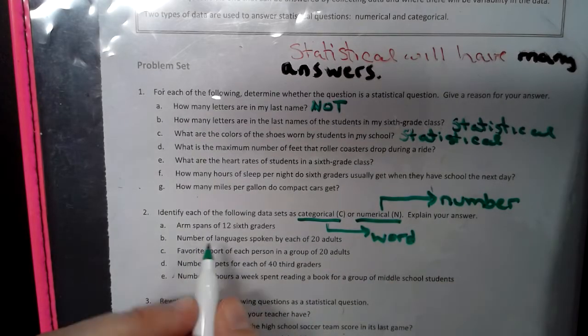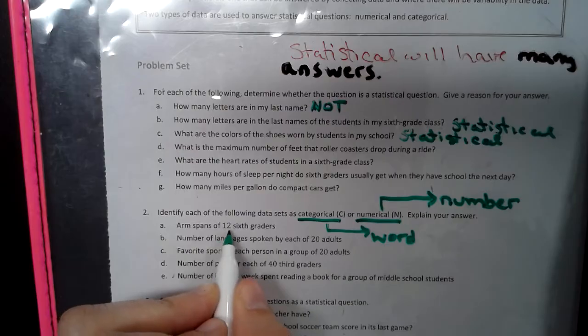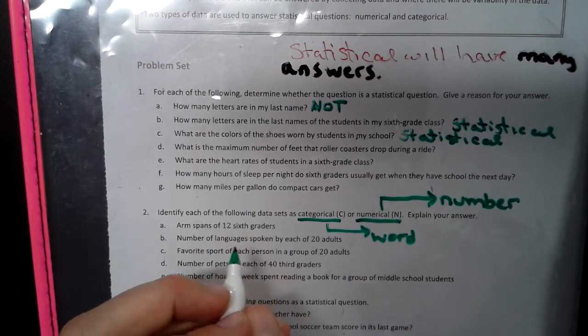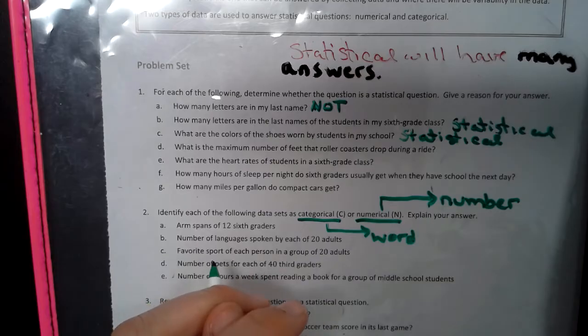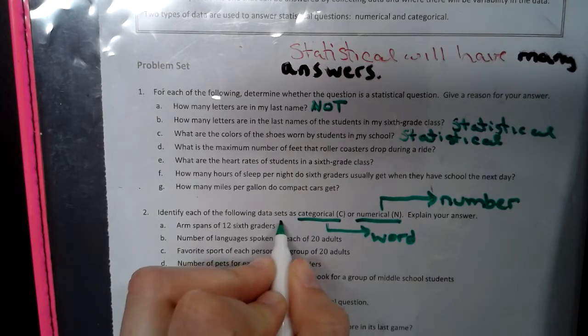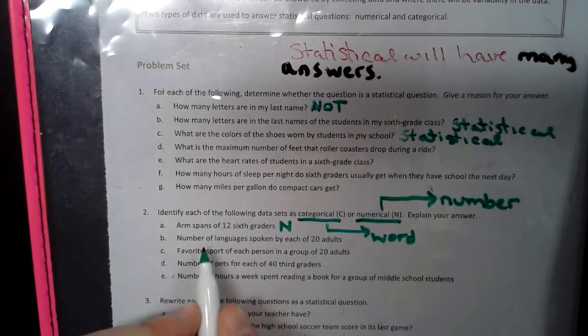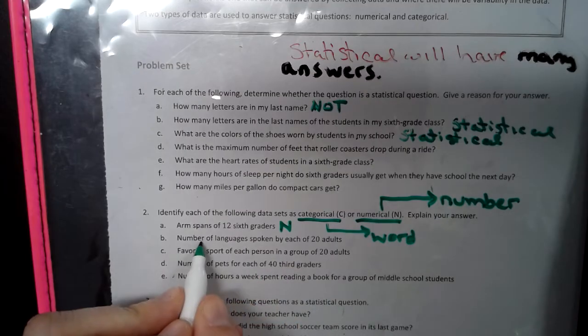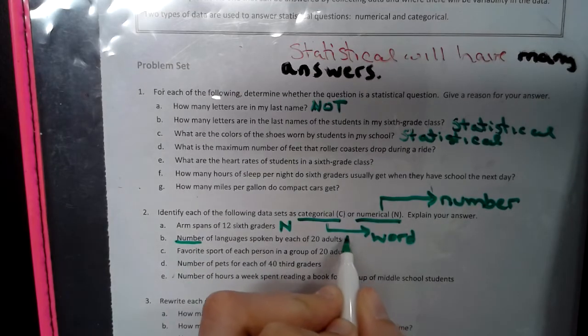So the arm span of 12 sixth graders, well, if we're measuring arm spans, that's going to be some form of a number. So that would be numerical. Number of languages spoke by each of 20 adults, that would be number. It even tells you right in the sentence on that one.